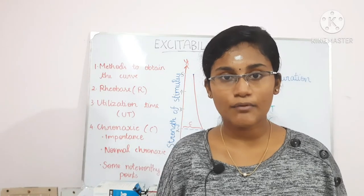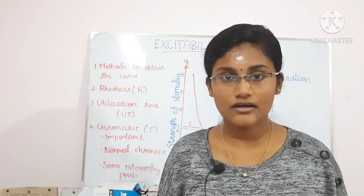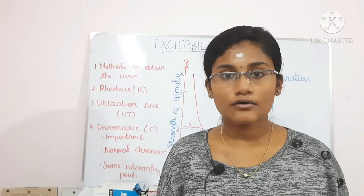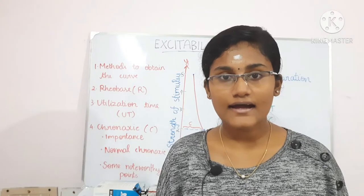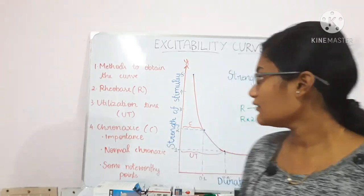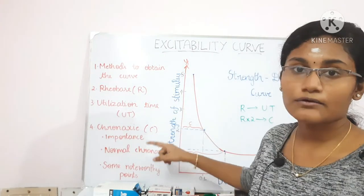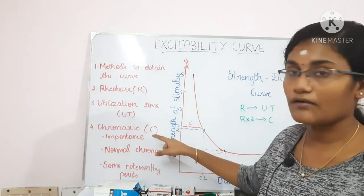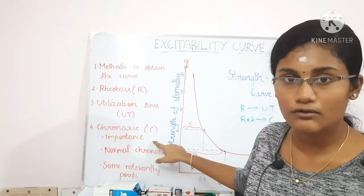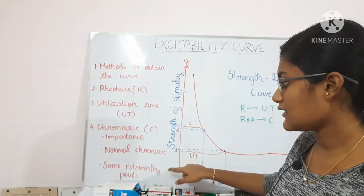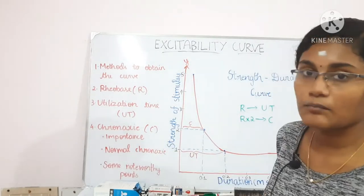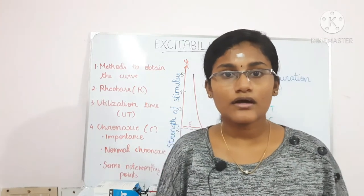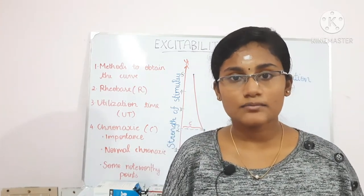There are three characteristics that are most important for the strength-duration curve: those are the rheobase, chronaxi, and utilization time. Under chronaxi, we will be talking about its importance, the normal chronaxi values, and some noteworthy points.